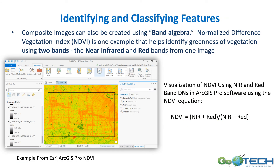Another technique using bands is called band algebra. There's an equation for NDVI — the Normalized Difference Vegetation Index — where you take the near-infrared band minus the red band, divided by the near-infrared plus the red band, to produce a composite image. This shows the greenness of an area: green values indicate vegetation, while reds and yellows indicate built-up or non-vegetated areas.